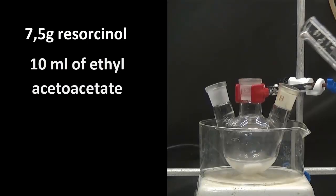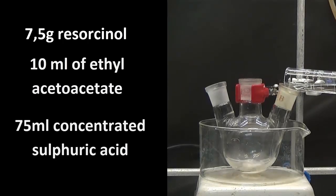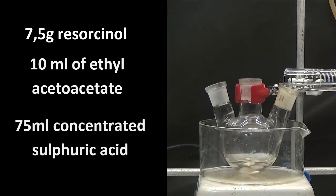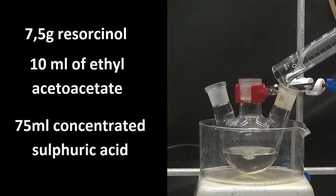In a 250 ml flask with a cold bath, we add 75 ml of concentrated sulfuric acid and equip it with a thermometer and an addition funnel.